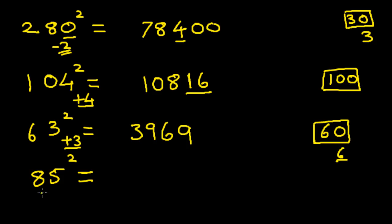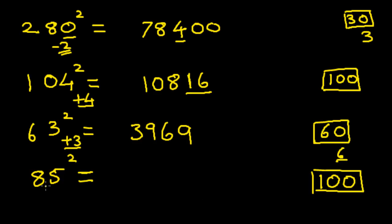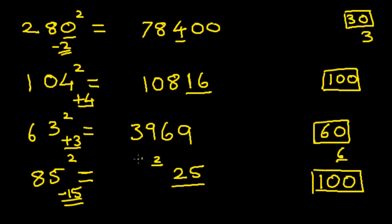Next we find the square of 85. There are many ways to do this — we could use the method for squaring numbers ending in 5 shown in the earlier video — but in this case we'll take the base 100. First step: 85 minus 100 is minus 15. Next, find the square of 15 — it's 225. We take a carry of 2 and put the next two digits, 25, as part of the answer. Then add 85 and minus 15 to get 70, plus the carry of 2 gives you 72. The answer is 7225.